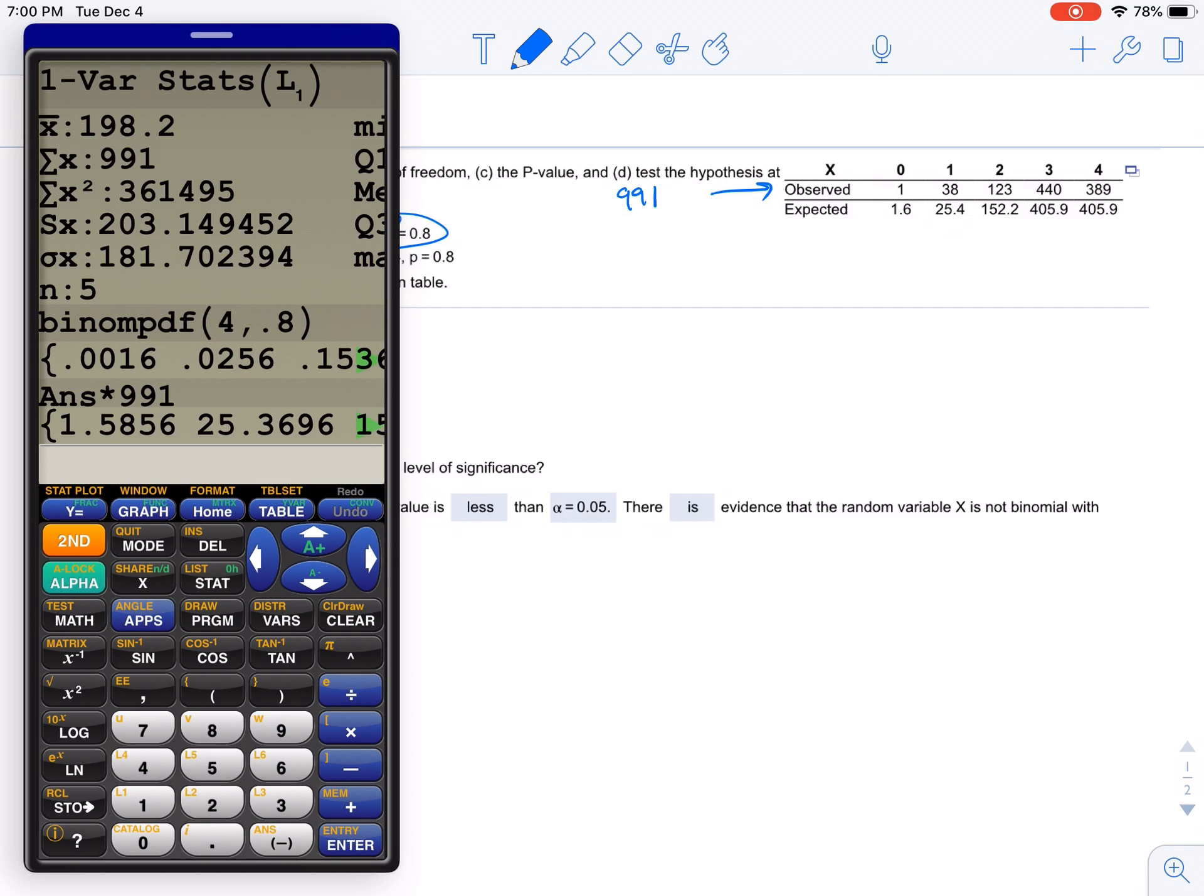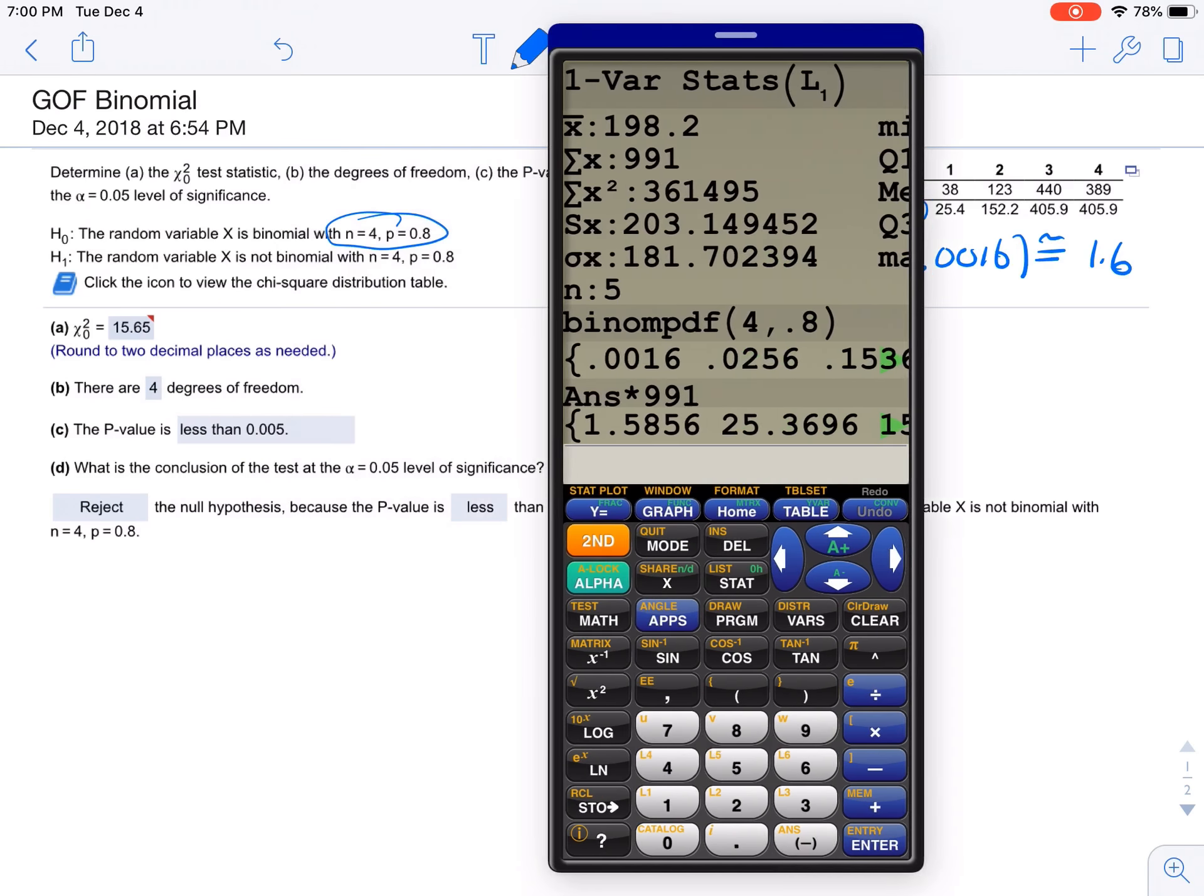Now, if I multiply that times 991, I get my expected values. Because remember, the expected values formula is n times p. So when I did the binomial PDF, those were all my p's. So for instance, 991 times 0.0016 is 1.5856, or approximately 1.6. That's how they got that one. So anyways, that's why they gave us the expected values, because that's a little bit tough to do. We don't have to, because they gave that to us.